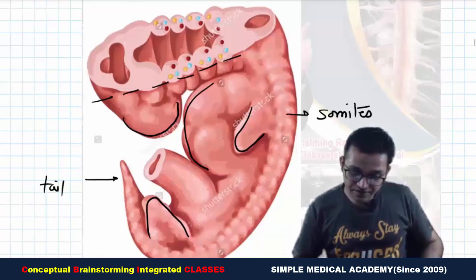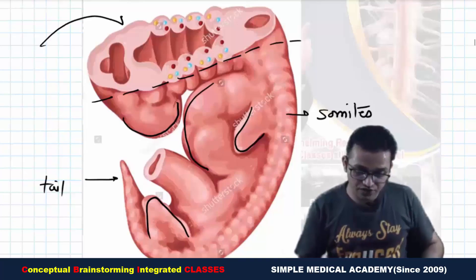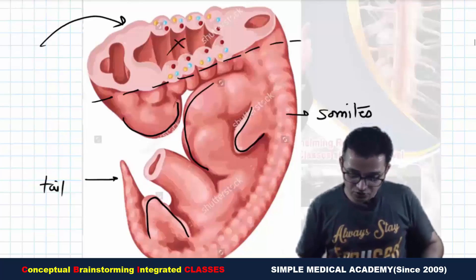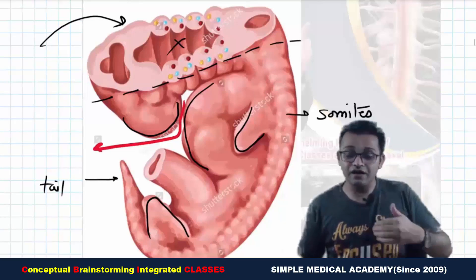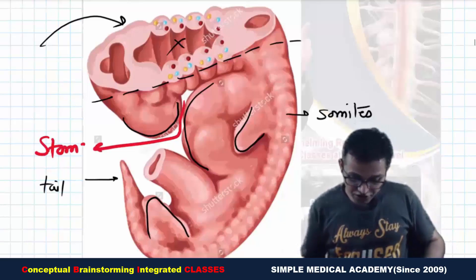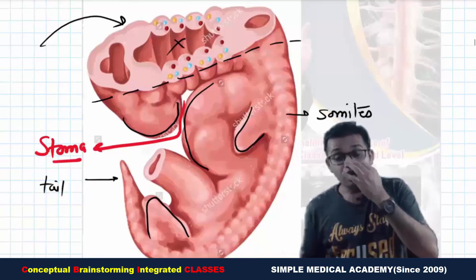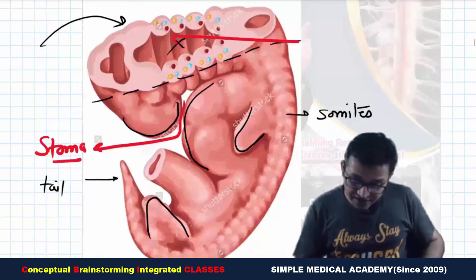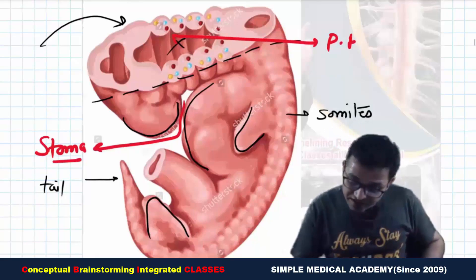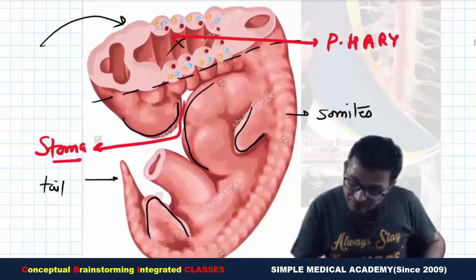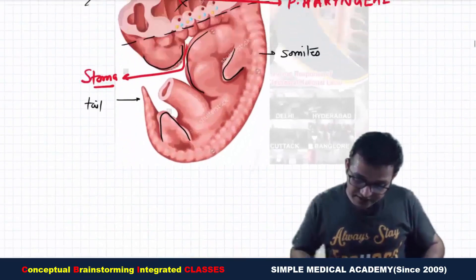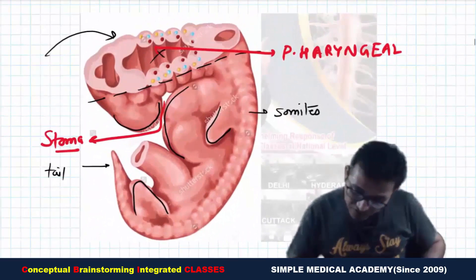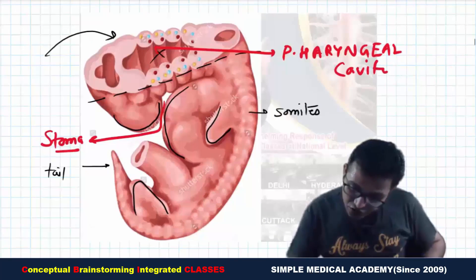We are cutting the embryo from the pharyngeal cavity part and looking from the back side and from the inside. The gap between the head and the cardiac bulge is known as the stomodium, or the mouth. This cavity is known as the pharyngeal cavity.